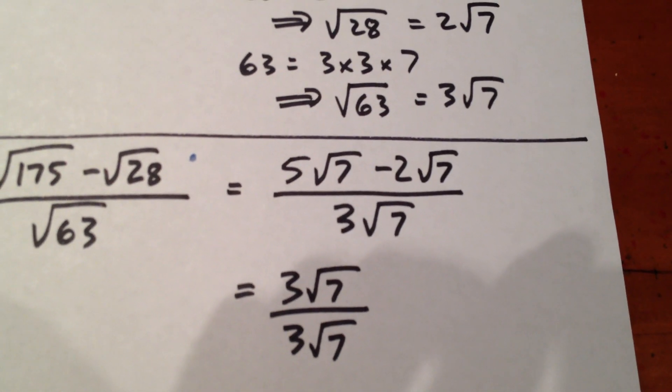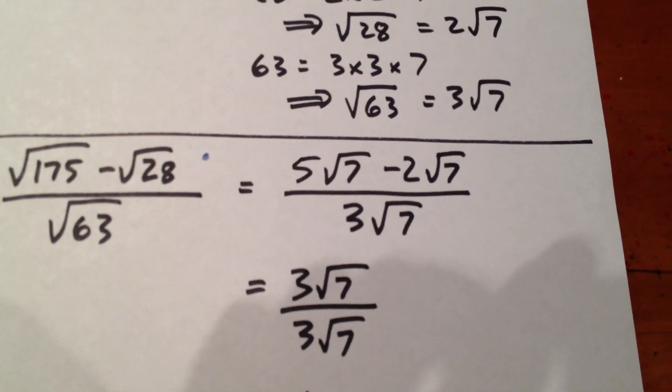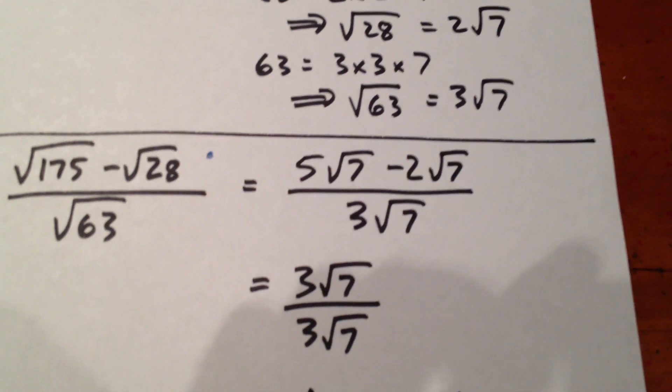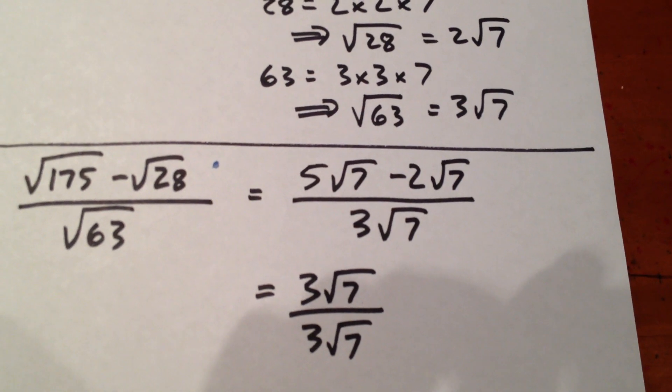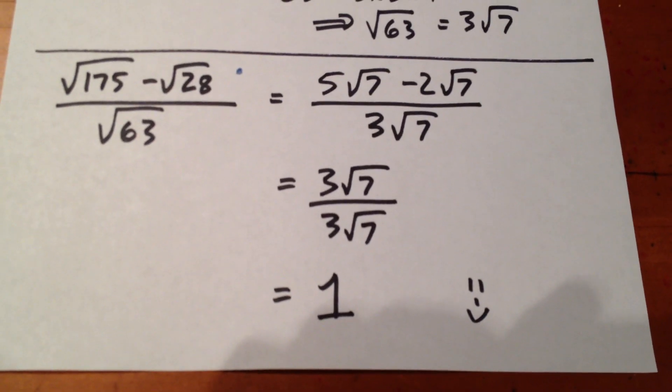So whenever we have a fraction where the numerator and denominator equal, so long as we're not talking about 0 over 0, which is undefined, we ultimately end up with a value of 1. And that's our final answer.